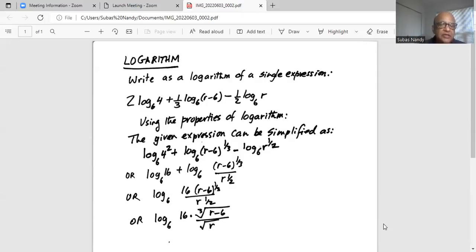Sorry, logarithm to the base 6 and 16 is multiplied by r minus 6 exponent one third divided by r exponent half, which can be further simplified to logarithm to the base 6, 16 multiplied by one third is cube root of r minus 6 and half is square root of r. So the final expression is logarithm to the base 6, 16 multiplied by cube root of r minus 6 divided by square root of r.